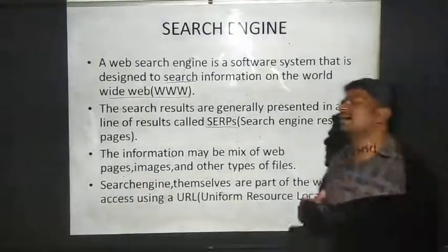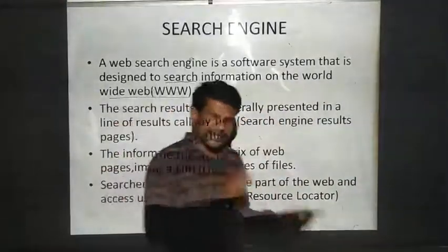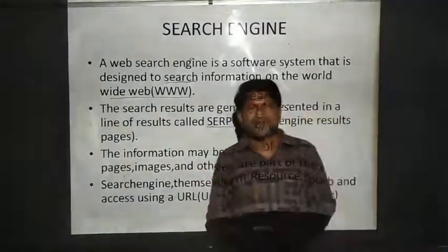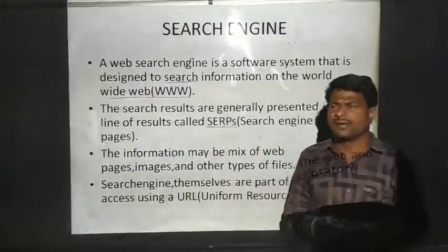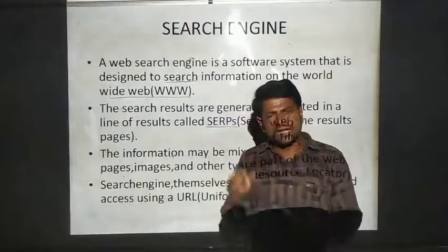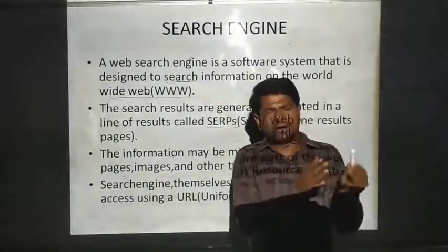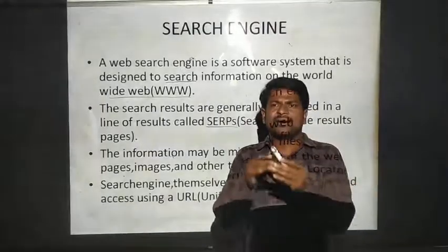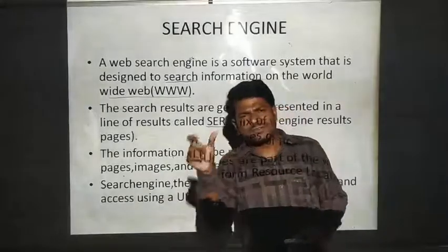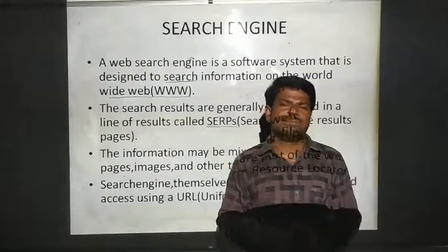The information in the search engine may be text, images, graphics, or any other multimedia information. If you see Google, below the search box you will see options for images, maps, and different types of information that Google provides below the search box.